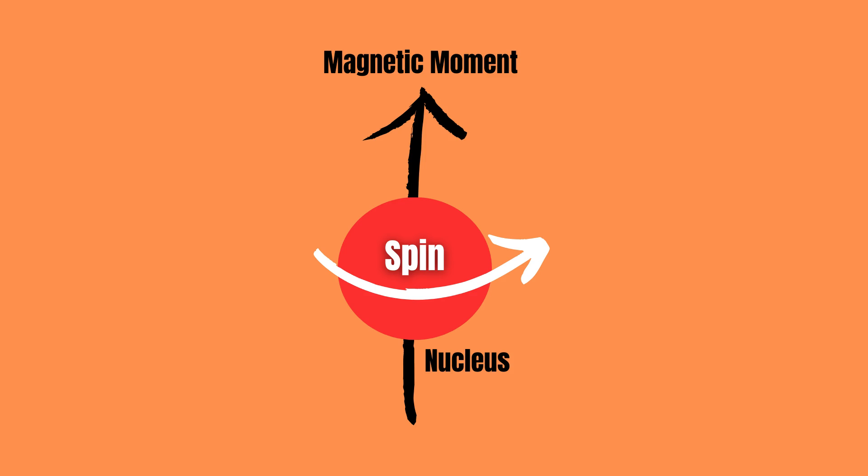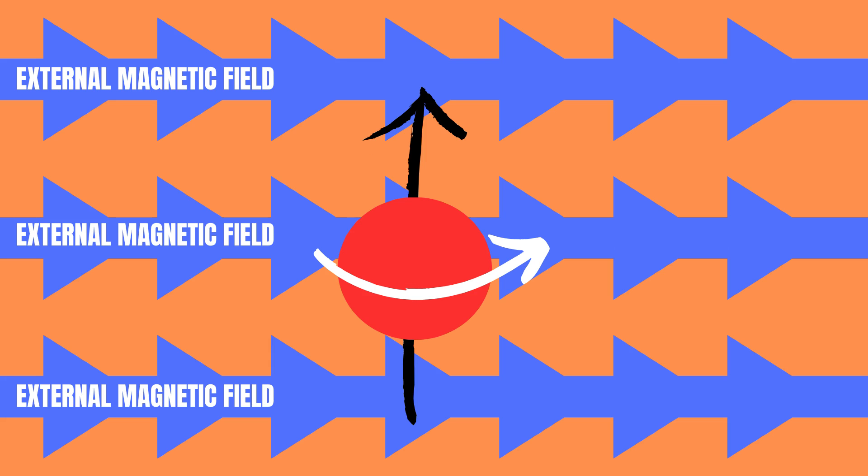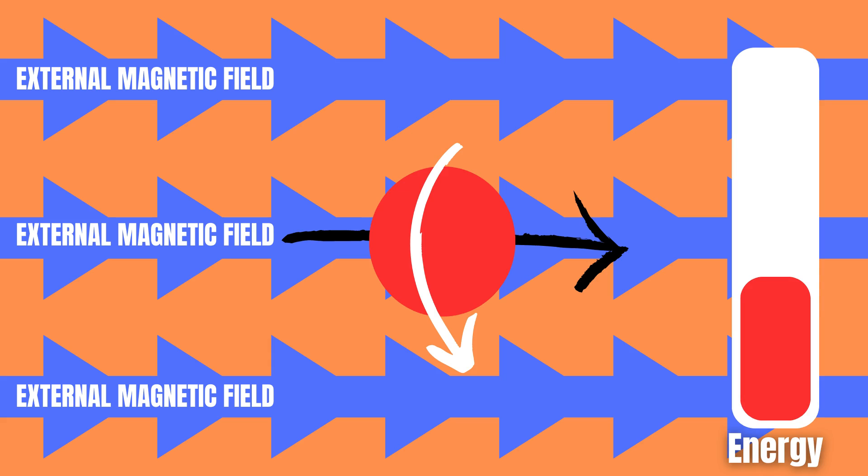NMR works by applying a strong external magnetic field, causing any nuclei with a spin state and subsequent magnetic moment to align with the magnetic field.